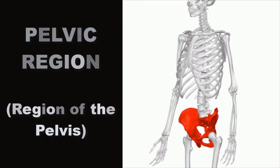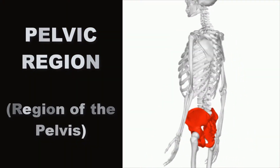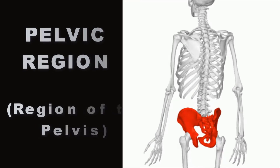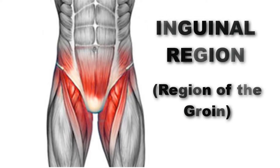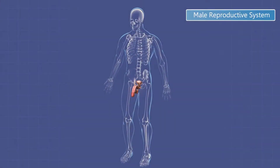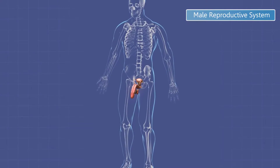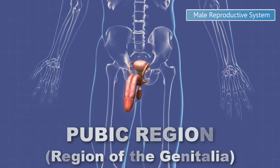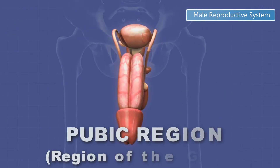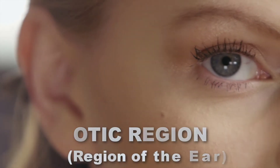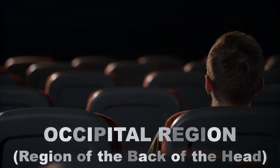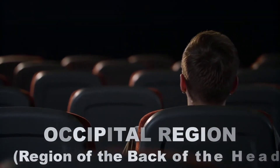The pelvic region includes the region of the pelvis. The inguinal region, or groin region, is the area of the bladder and internal reproductive organs. The pubic area or genital area comprises the external genitalia. The otic region is the region of the ear, and the occipital region is the back of the head.